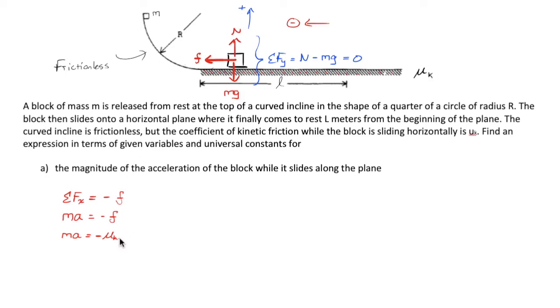N minus mg equal to 0 says that N is equivalent to mg. That's usually the case, but sometimes people apply that idea in inappropriate places. I was just showing you that we do have the justification from Newton's second law to say that the normal force and the weight of the box are the same. The acceleration equals, dividing both sides by m, negative mu k mg over m, which cancels out the m's.